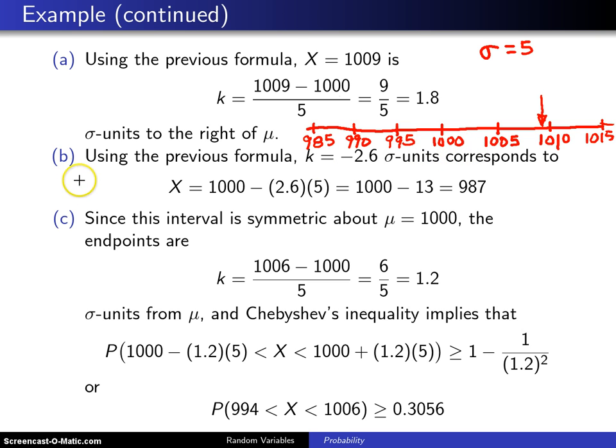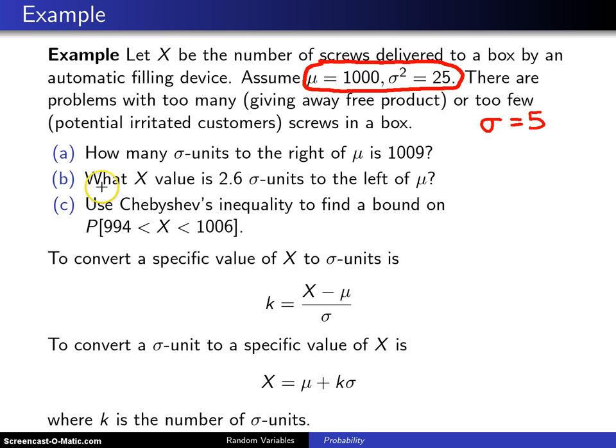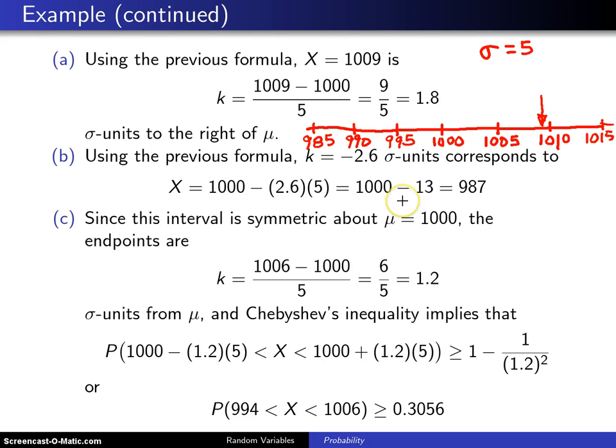Now the question going in the other direction, and this is part B. The question in part B was, what X value is 2.6 sigma units to the left of mu? If you go to our number line and start at 1000, here is one standard deviation to the left, two standard deviations to the left, and 2.6 standard deviations is about right here.